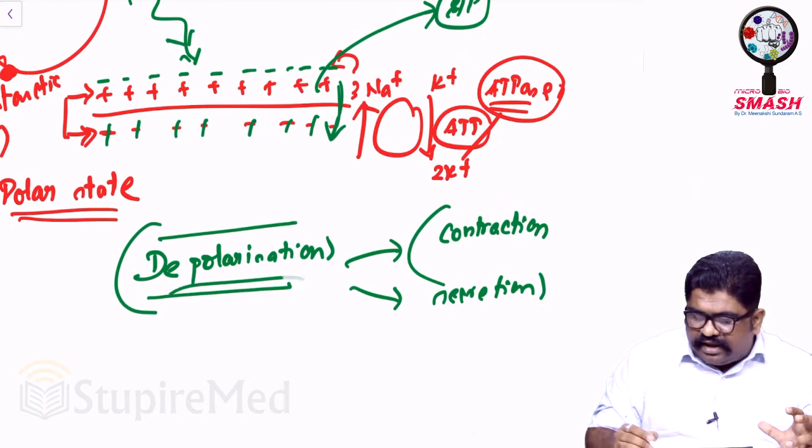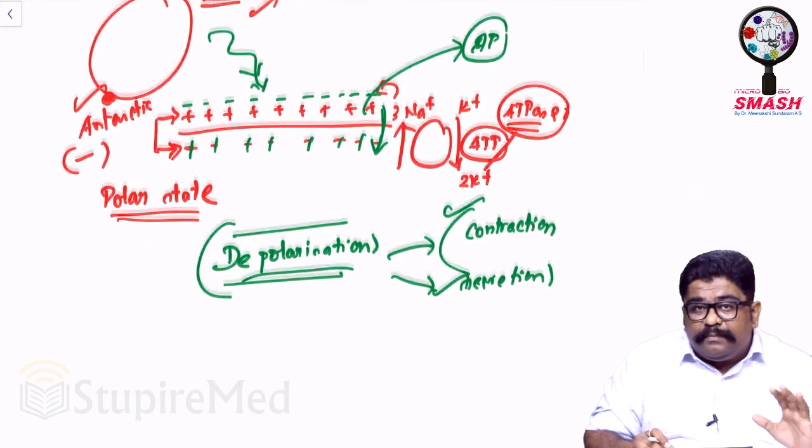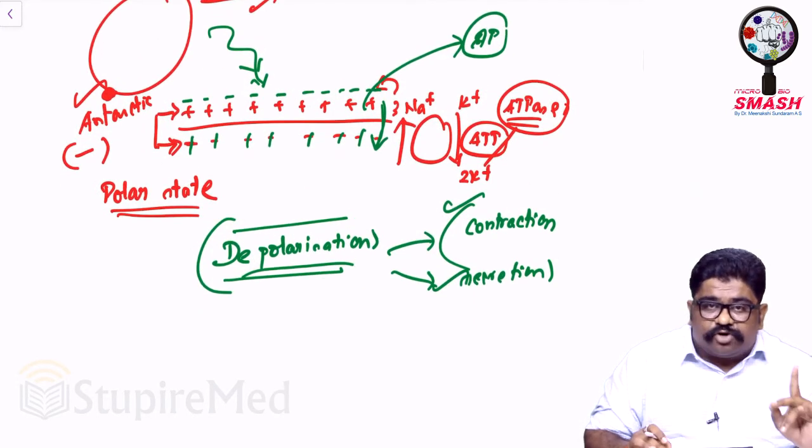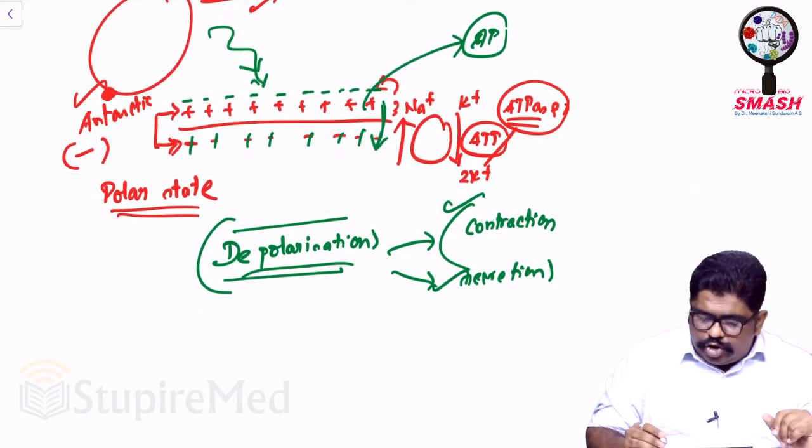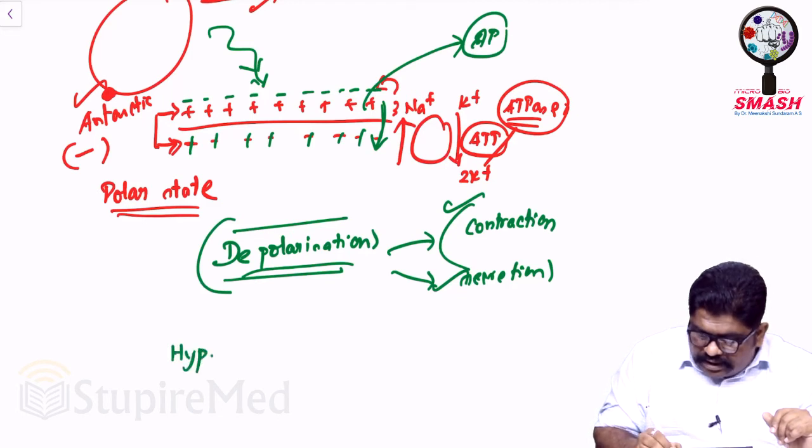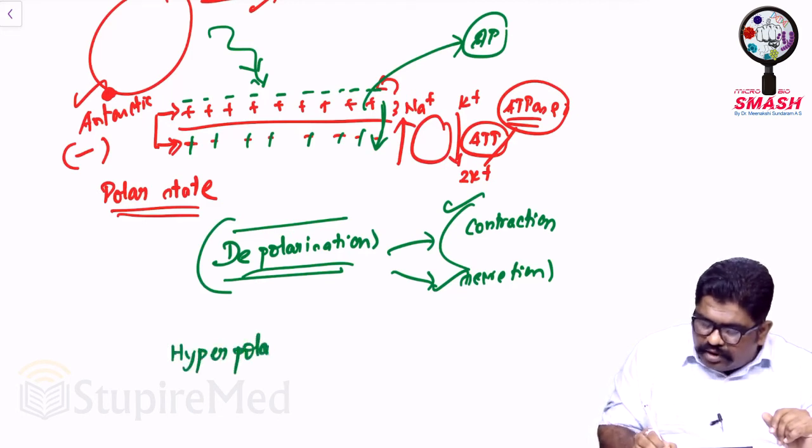Now in case of your retinal pigmental epithelium, or in case of rods of your eye, you will be having hyperpolarization giving rise to action potential or activation of the end result.